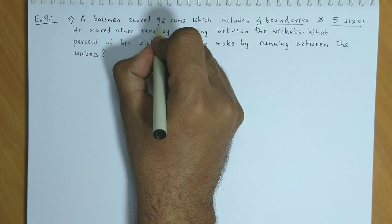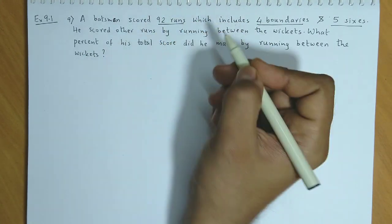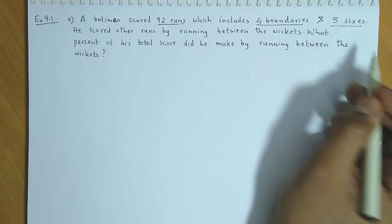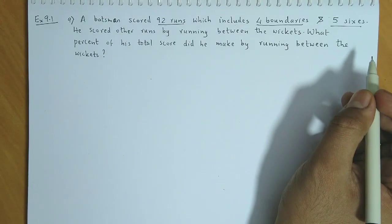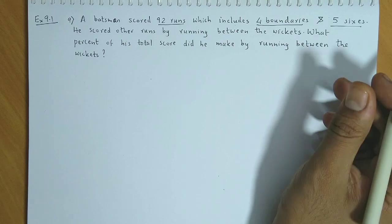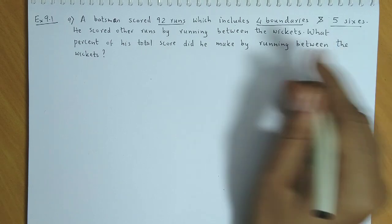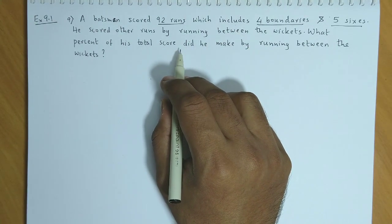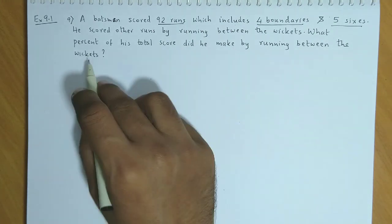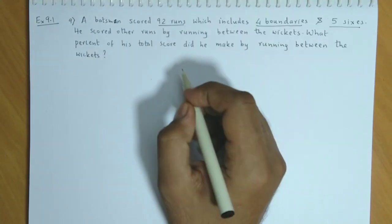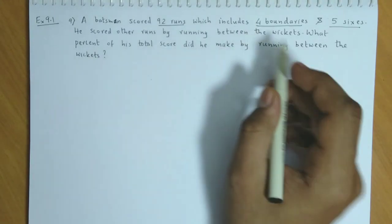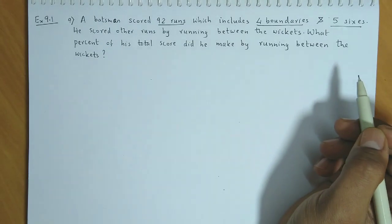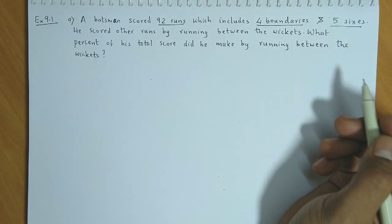His total score is 92 runs, which includes 4 boundaries and 5 sixes. We have been asked what percentage of the total score is made by running between the wickets. So let's see how much score is generated by 4 boundaries and 5 sixes.